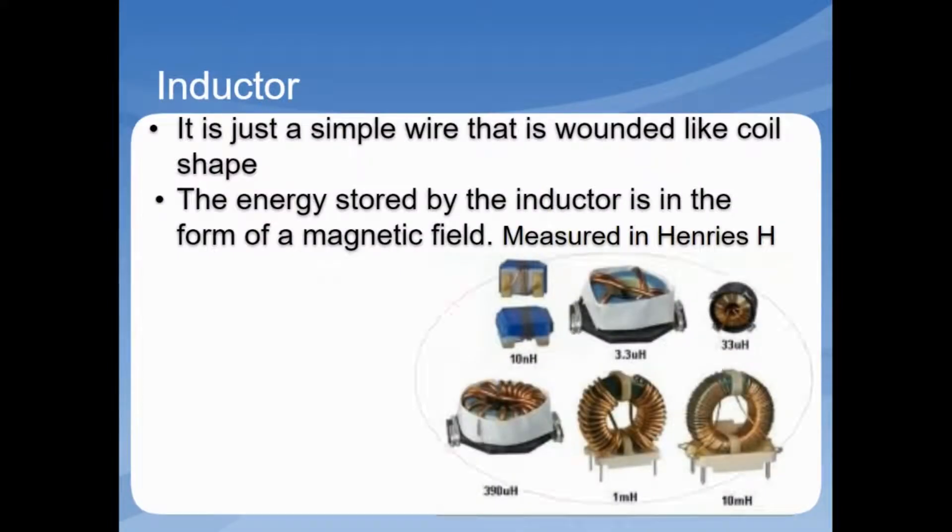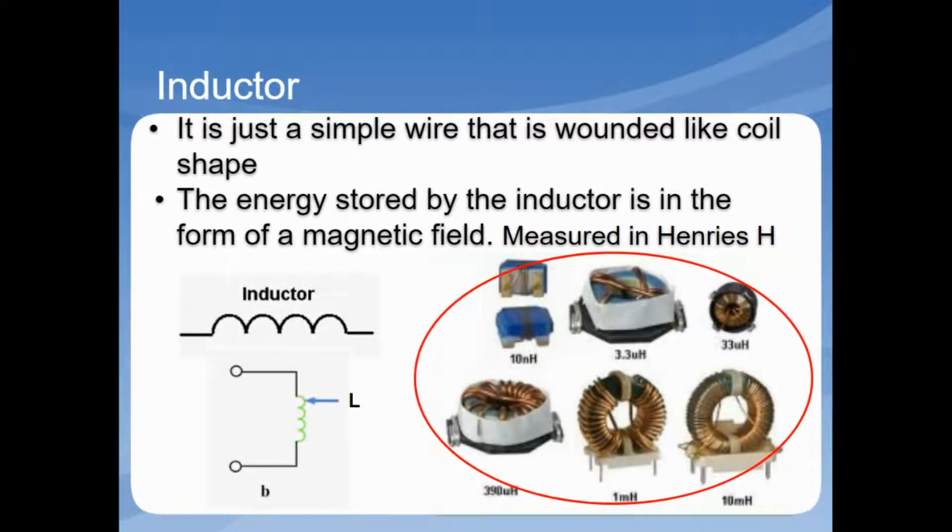An inductor is simply a wire winding into a coil. We often use the letter L as a symbol to represent an inductor in an electric diagram. Since wires have finite resistance, the inductor also has some resistance and dissipates power. Similar to a capacitor, the energy stored by the inductor is in the form of a magnetic field and it's measured in henrys.